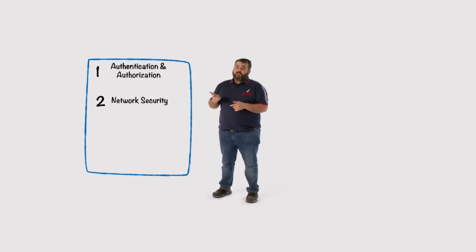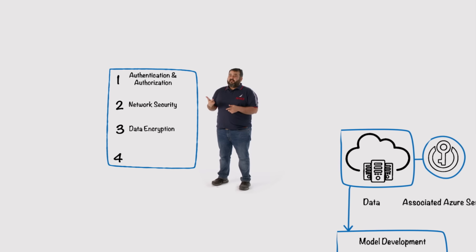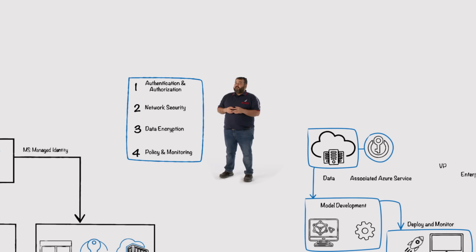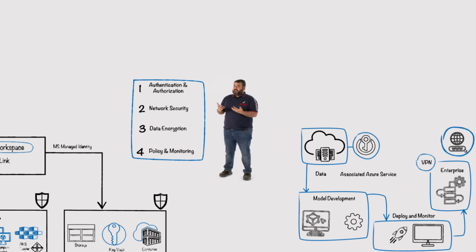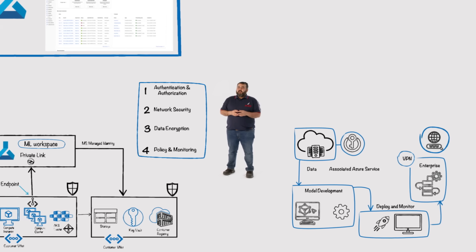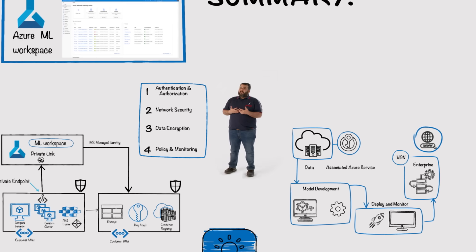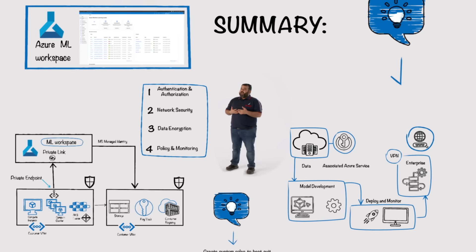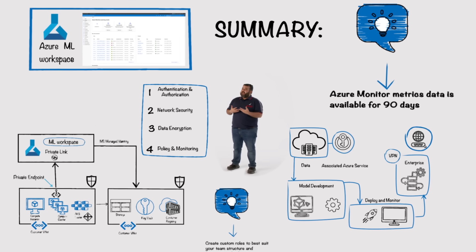To summarize, in this video we observed that Azure Machine Learning provides easy-to-use and seamlessly integrated capabilities around access control, network isolation, data encryption, and policy and monitoring. All these can be configured in an automated way using either the command line interface or ARM templates, or even designing your own tools with the REST APIs provided. These are important, as with these automation capabilities, organizations of all sizes can ensure that they can enable their data science teams to innovate and deliver value securely.